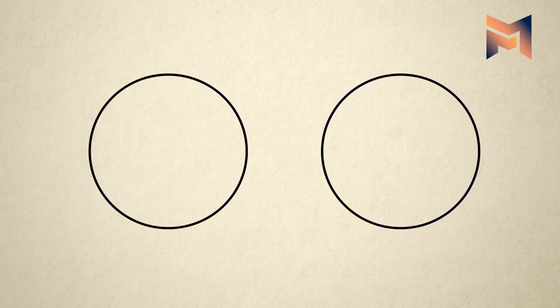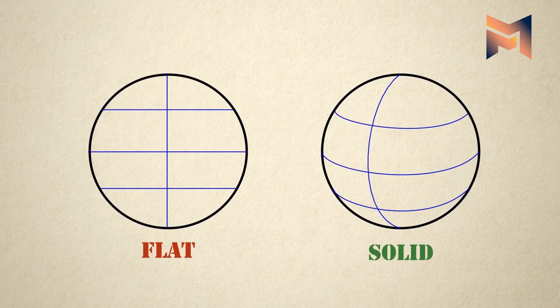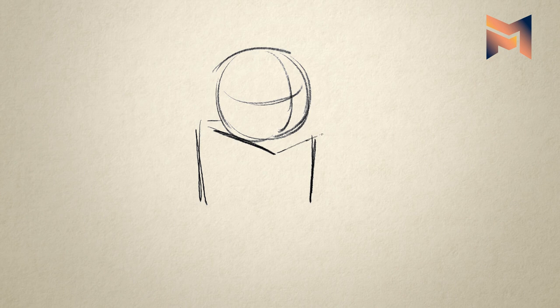When doing a rough pass of the character, use basic solid shapes like spheres, cubes, and cylinders to construct the character. And always try to make characters with the help of shapes.